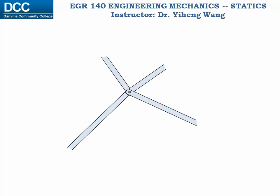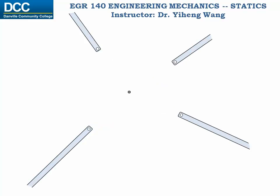Let's imagine several truss members joined together by a pin. Then if we separate them, the pin exerts forces on these members, and for convenience, let's assume they are all tensions. Because of action and reaction, the truss members also exert forces on the pin, of the same magnitudes. Therefore, if we want to know what the forces in the truss members are, we can simply solve for the forces acting on the pin instead, and this becomes a particle equilibrium problem because pins can be considered as particles.